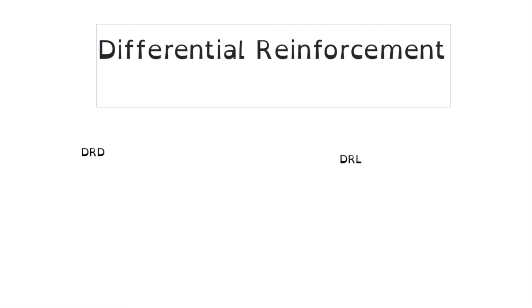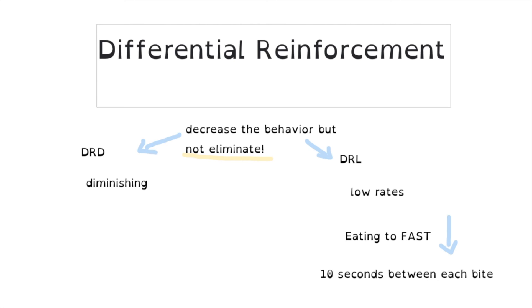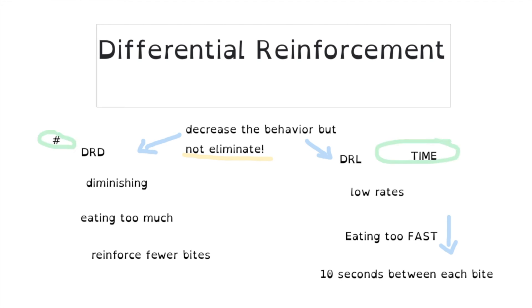Two other schedules are DRD — differential reinforcement of diminishing rates of behavior — and DRL — differential reinforcement of low rates of behavior. Both want to decrease some element of the behavior but not eliminate it completely. DRL is for a behavior that happens too fast, like eating too quickly. We don't want to eliminate eating, but we decrease the rate — for example, reinforcing after waiting 10 seconds between each bite. DRD is for someone who might eat too much in one setting; we reinforce a diminishing number of bites per meal, like 20 bites instead of over 100, or a specific quantity of food.